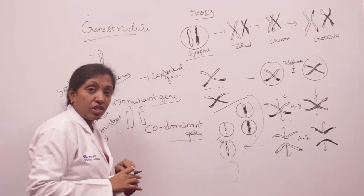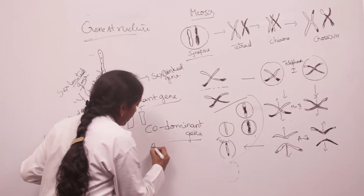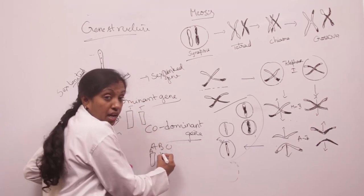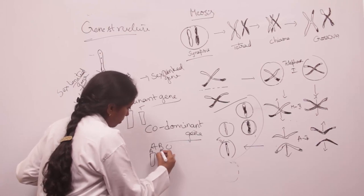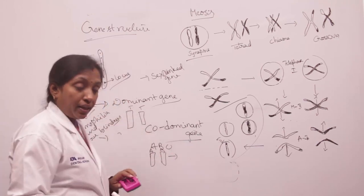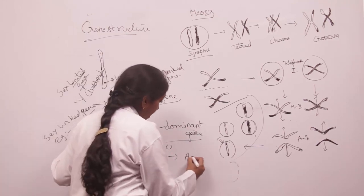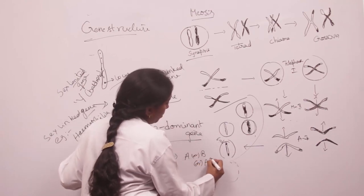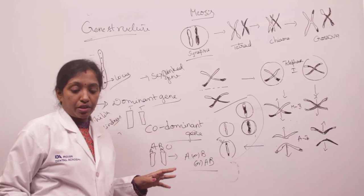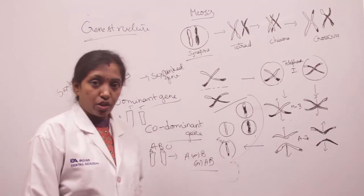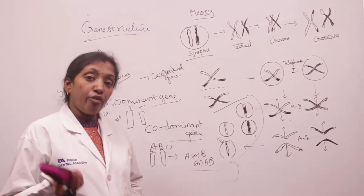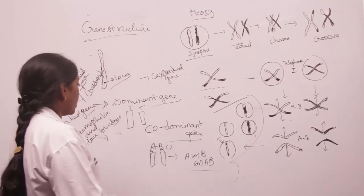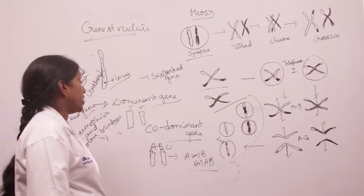Co-dominant genes — both genes are dominant with each other and we call them co-dominant genes. An example is the ABO blood group, where A is a dominant gene and B is also a dominant gene. The resulting offspring may be A blood group, B blood group, or AB blood group.